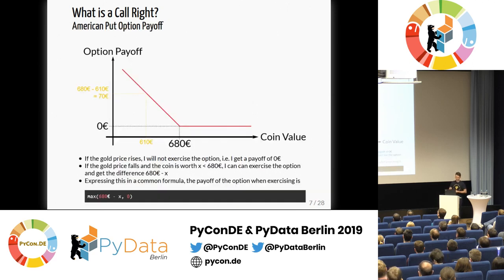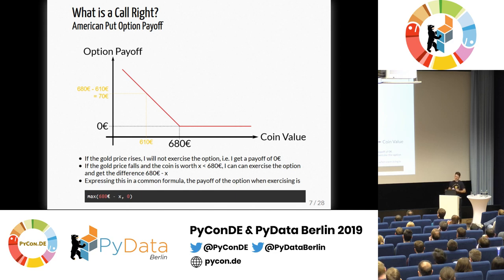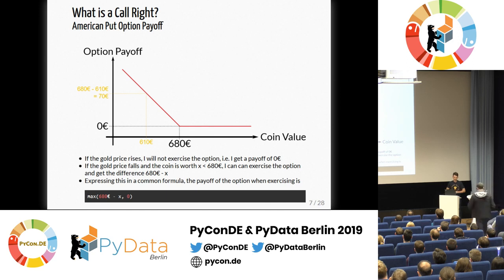Let's formalize it a bit more. We have the coin value on the x-axis and the option payoff on the y-axis. If the coin value is above 680 euros, I will not exercise, so there's no payoff at all. If the coin value is below 680 euros, I might exercise. Assuming the coin value is at 610 euros, I receive 680 minus 610 equals 70 euros. Expressed as a formula, what I get from the option is the maximum of (680 minus x) and zero, where x is the current price.